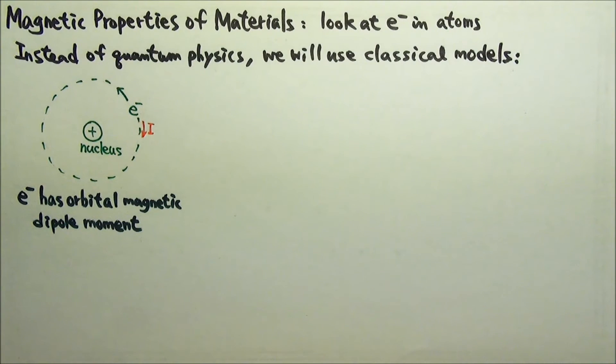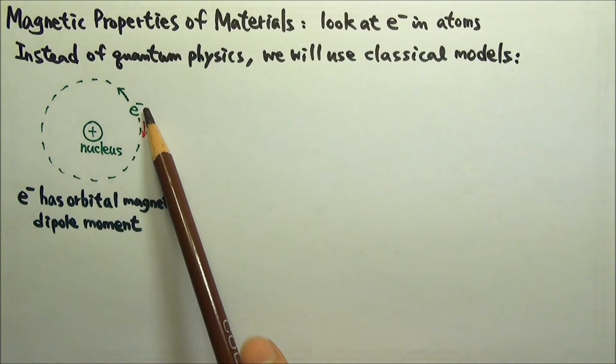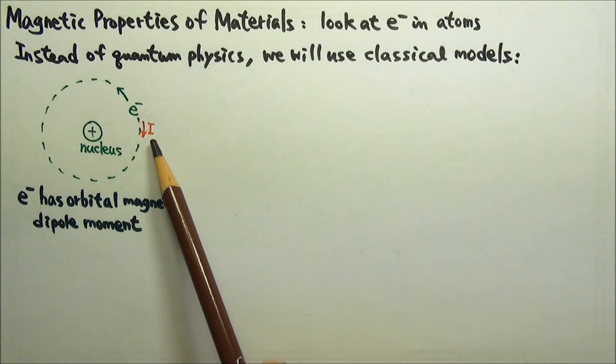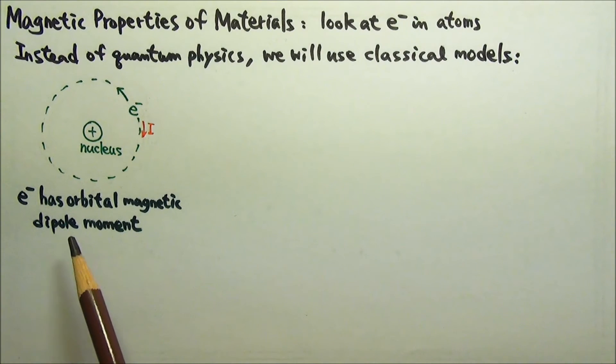In a classical atom model, electrons orbit around the nucleus. Having a negatively charged electron going around in a loop is equivalent to a positive electric current flowing in the opposite direction. So an orbiting electron is like a current loop, and therefore has an orbital magnetic dipole moment.